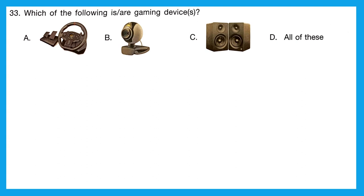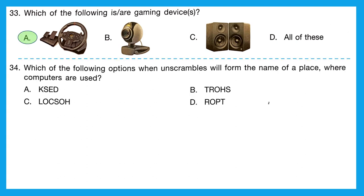Question 33: which of the following is a gaming device? Option A looks like a gaming device, B is a camera, C is a speaker, D is all of these. The right answer is option A. Question 34: unscramble the options to find a place where computers are used. Option C unscrambles to SCHOOL, which is a place where computers are definitely used. The correct option is C.